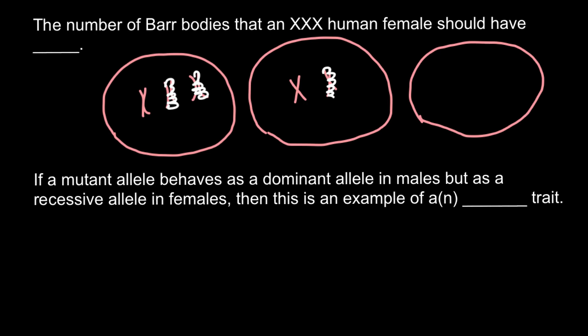Another example: one X chromosome, another X chromosome, and a Y chromosome. So this would phenotypically be male. But once again, only one active X chromosome can be found in the nucleus. This male would also have a Barr body. So this is how we would know that this male has one extra X chromosome, because a normal male does not have Barr bodies.